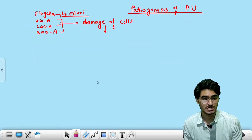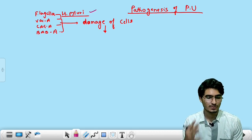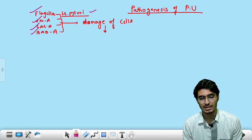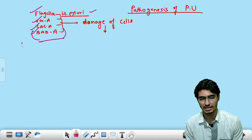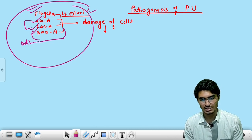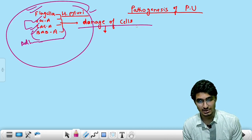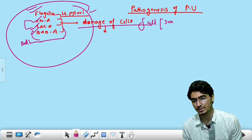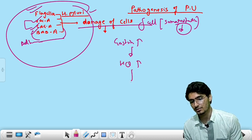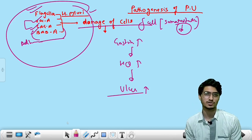H. pylori virulence factors: flagella (motility), VacA (vacuolating cytotoxin — causing cytotoxicity), CagA (causing cellular damage), and BabA (adhesion molecule). These aggressive factors damage delta cells, which secrete somatostatin. With less somatostatin, gastrin release is increased, HCL is increased, and the risk of ulceration is raised.